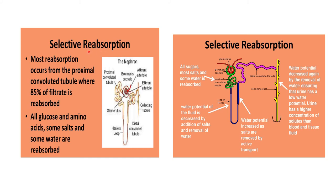The second step is selective reabsorption. Most reabsorption occurs from the proximal convoluted tubule, where 85% of the filtrate is reabsorbed. All glucose, amino acids, some salts, and some water are reabsorbed in the proximal convoluted tubules back into the blood. This is known as selective reabsorption.